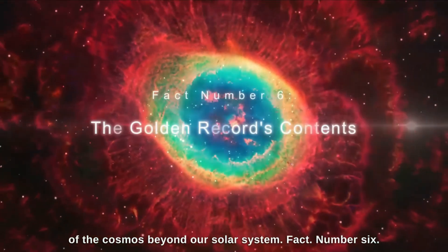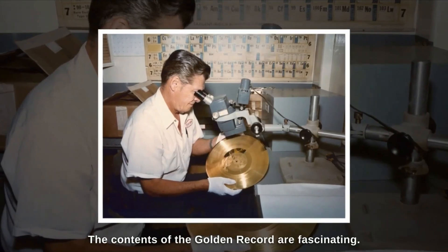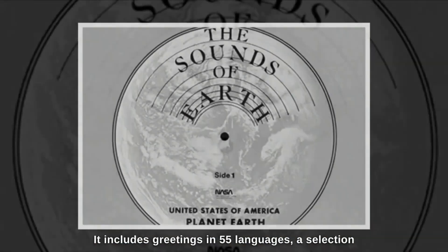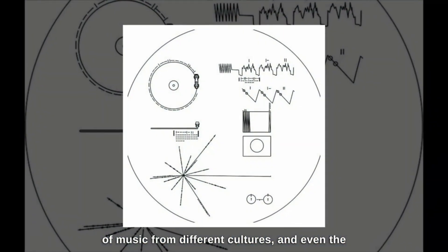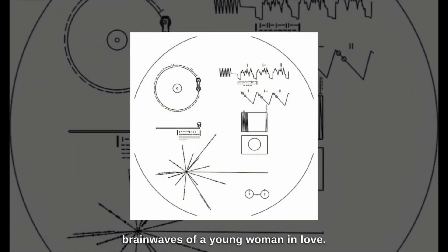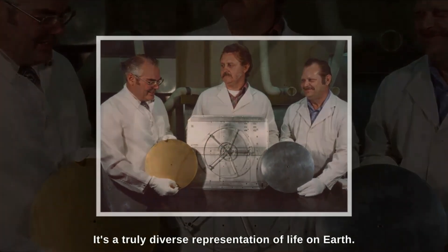Fact number 6. The Golden Record's Contents. The contents of the Golden Record are fascinating. It includes greetings in 55 languages, a selection of music from different cultures, and even the brainwaves of a young woman in love. It's a truly diverse representation of life on Earth.